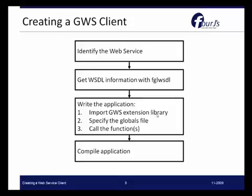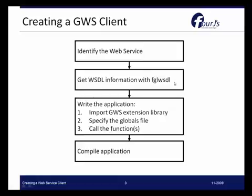The general steps for creating a web services client is to first identify the web service that you want to use. That web service will provide a WSDL, which is the descriptive file needed for using that web service. Genero comes with a utility called FGL WSDL that allows you to extract from a WSDL the information needed to work with and utilize the web service.